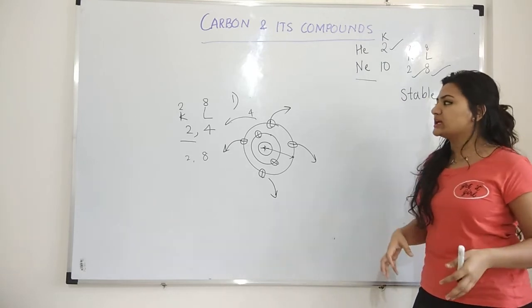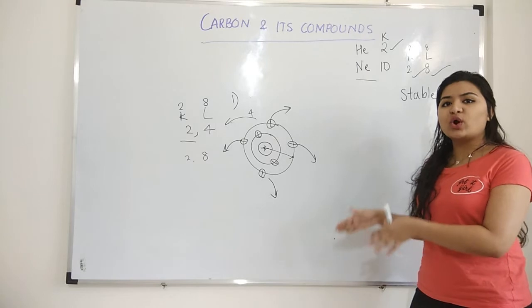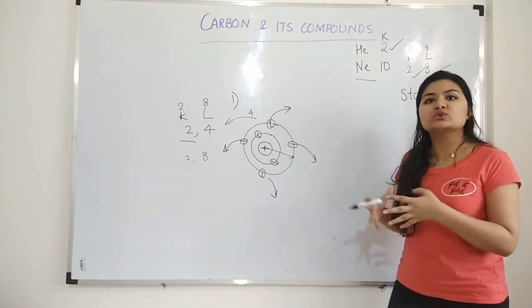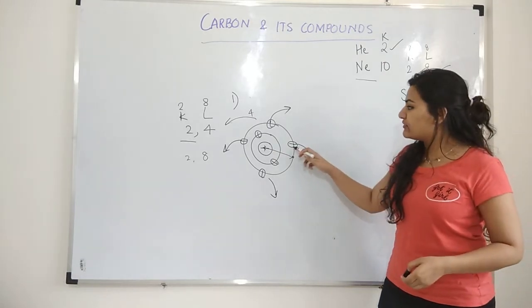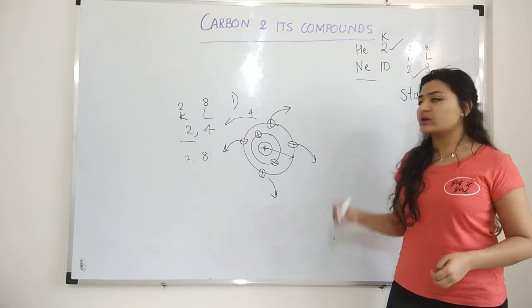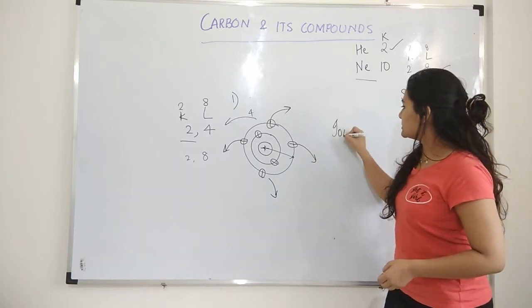Now both the cases, carbon cannot follow. Because as I told you, your force of attraction is so high that if it is removing four electrons at a time, it will require a lot of ionization energy.